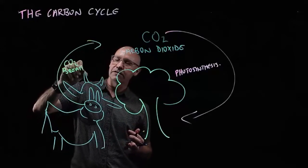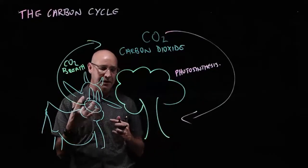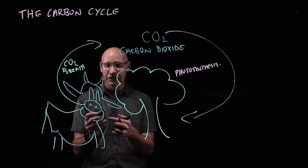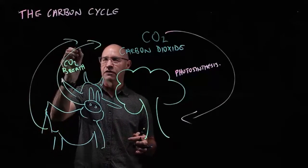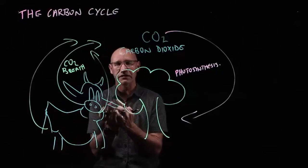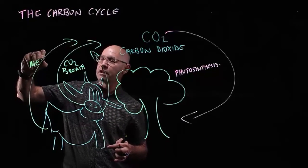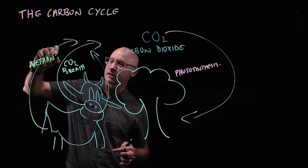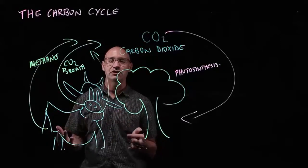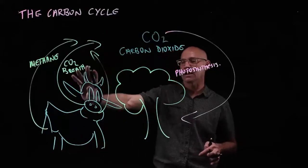But as well as that, and particularly when we have organisms like our cows and other ruminants, other organisms that eat grass, they actually produce quite a lot of methane through the digestive system. The process of breaking down the grass produces methane, and methane also contains carbon. And of course it's coming out of the backside because that methane is in flatulence. So that's one of the ways in which carbon goes back up into the atmosphere.